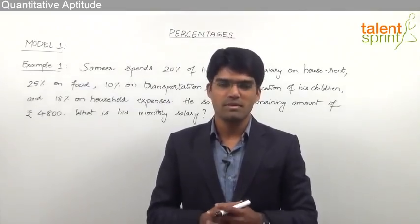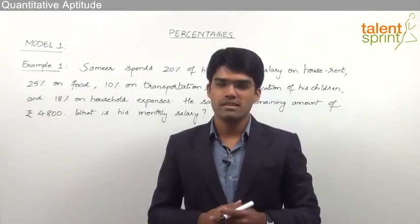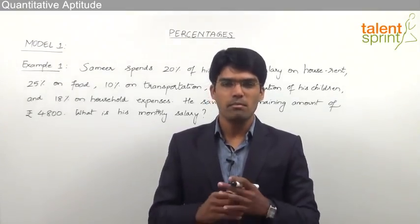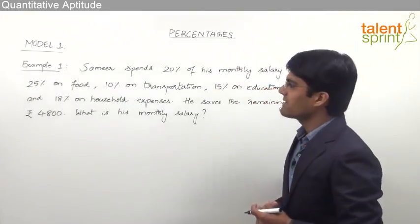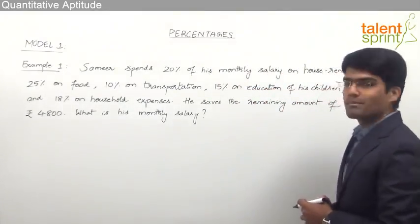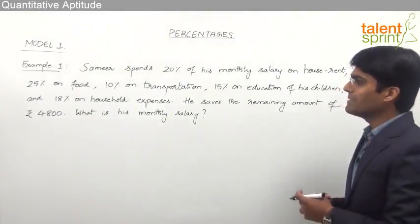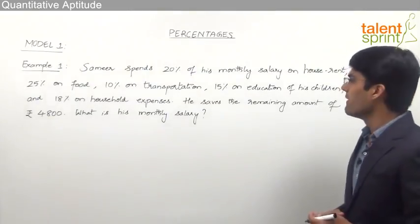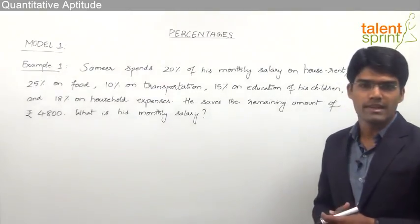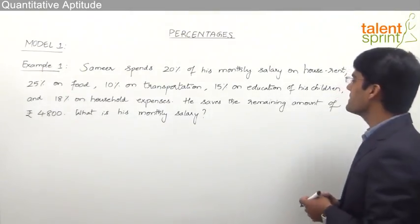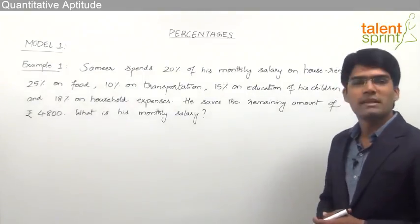Let us now take the first model from percentages, which is a very common question in bank exams where we are supposed to find out the total salary of a person based on his monthly budget. The given question here is: Samir spends 20% of his monthly salary on house rent, 25% on food, 10% on transportation, 15% on education of his children, and 18% on household expenses. He saves the remaining amount of Rs. 4,800. What is his monthly salary?